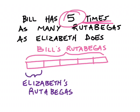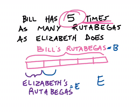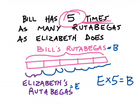And that's it for our bar diagram. Now we start to think about what relationship or relationships I'm seeing here. Let's call Elizabeth's rutabagas E because we don't know how many she has, and let's call Bill's B because we don't know how many he has. If I take Elizabeth's rutabagas and represent that as E, looking at my diagram I'd need five times as many rutabagas to make the number that Bill has. So I could say that E times five equals B — Elizabeth's rutabagas times five would equal Bill's rutabagas.